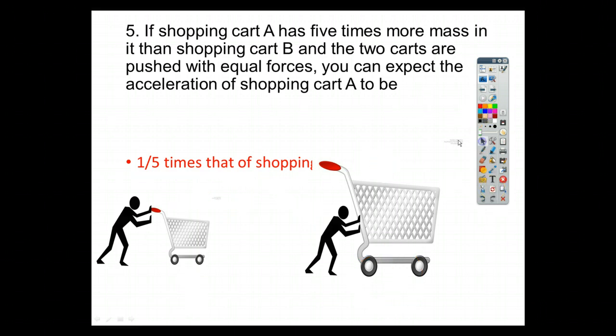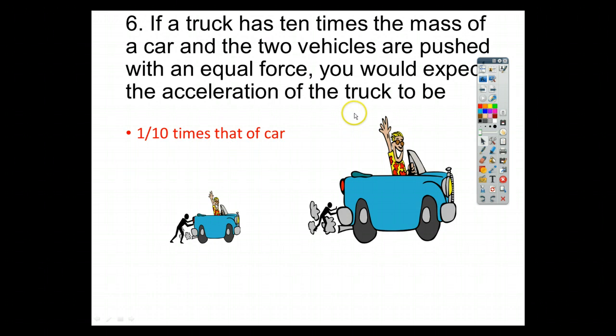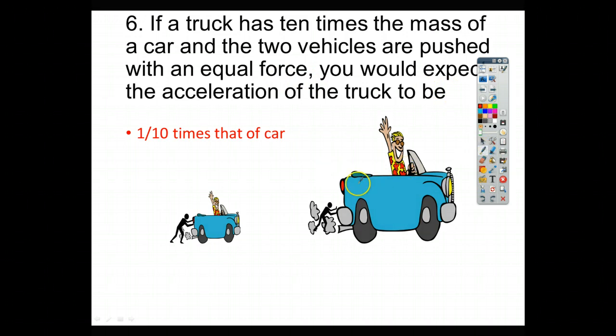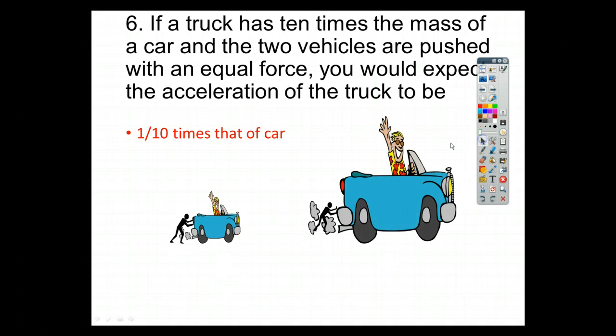Number 6. For number 6, it says, if a truck has 10 times the mass of a car and the two vehicles are pushed with an equal force, you would expect the acceleration of the truck to be one-tenth that of the car. So, here's our truck, here's our car pushing with the same amount of force because this one has a much bigger mass than this one does. Because it will not accelerate as quickly. So, the acceleration here will be big and the acceleration here will be really small.